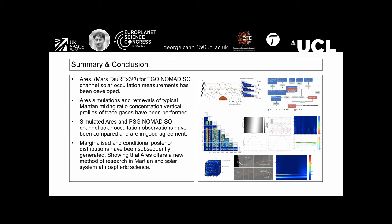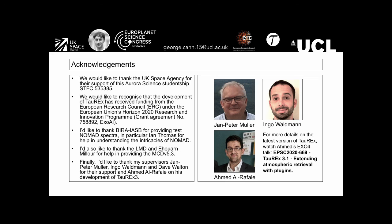To summarize, ARIES is a Mars version of TAREX-3, an atmospheric retrieval framework designed for the TGO NOMAD solar occultation channel. I've run simulations and retrievals using typical Martian mixing ratio concentrations. ARIES and the Planetary Spectrum Generator forward models have been compared for NOMAD solar occultation channel and are in good agreement. I've also shown marginalized and conditional posterior distributions. Finally, I've considered alternative representations of NOMAD data. These alternative representations combined with ARIES offer a new method of research into the Martian atmosphere and of solar system atmospheric science.